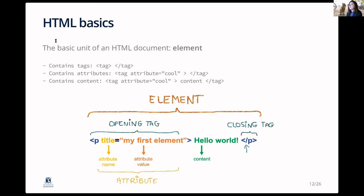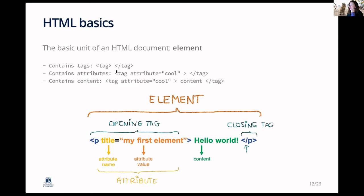In terms of HTML basics, all HTML documents are built with elements — that's the base unit. Elements contain tags: an opening tag and a closing tag. An element also contains attributes — for instance, at the opening tag you can add an attribute. And an element contains the content, which is what you see on the web.